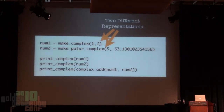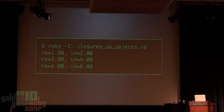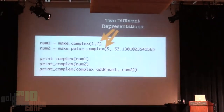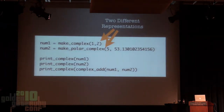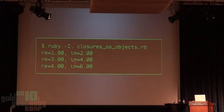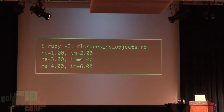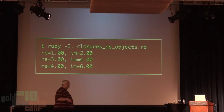I can make a complex number and a polar complex number—the polar number here uses magnitude and angle corresponding to our rectangular 3 and 4. When we print it out, we get 1 and 2, 3 and 4, and that 3 and 4 is actually our polar number expressed in rectangular coordinates, along with the sum of the two. So by using functional abstractions for polymorphism, I can get the same benefit that I would have gotten with OO.